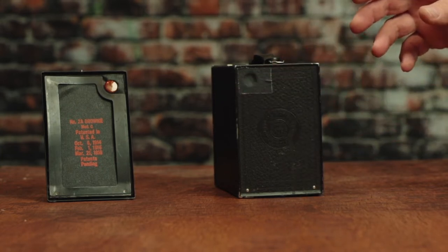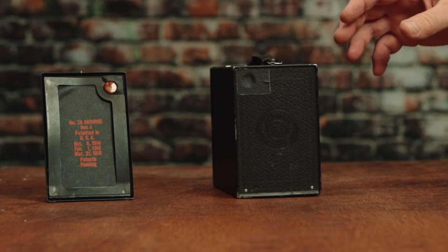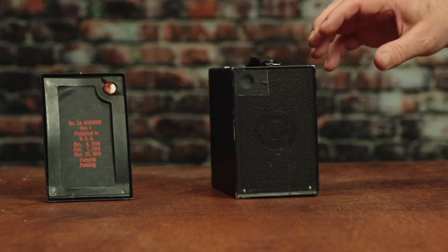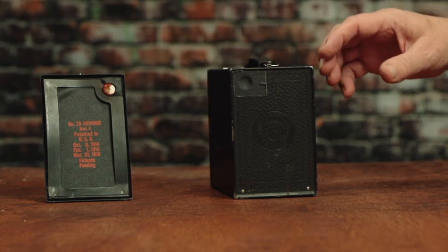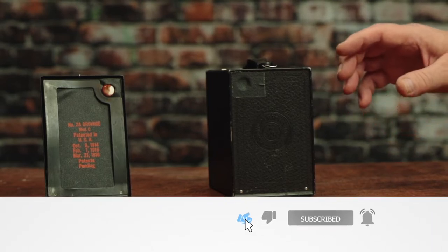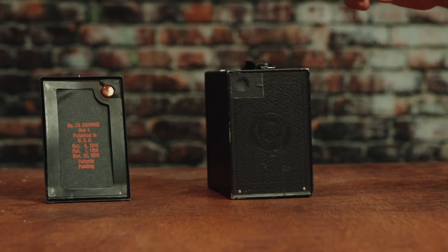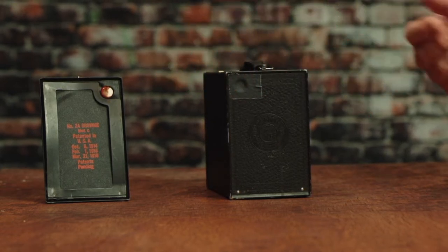And I recommend anybody who has a Brownie like this, if you're going to take alternate films like the 120 roll film that we're going to talk about today, or if you have plans to run 35 millimeter film through here, you want to be able to keep the light from going in there and exposing your film. So just tape over it. This is gaffer tape so it will peel off and won't ruin the camera.